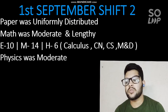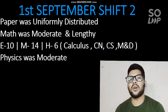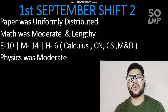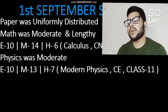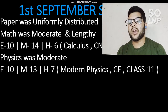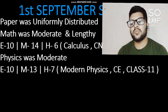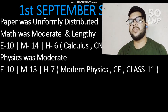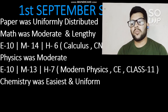For Physics, it was moderate — some institutes rated it moderate to easy, and some students said easy to moderate. There were 10 easy, 13 moderate, and 7 hard questions. Questions were asked mostly from Modern Physics and Current Electricity. A unique feature of this shift was that Class 11 topics had more weightage than Class 12, especially in the Physics paper.